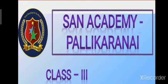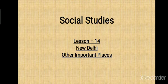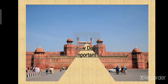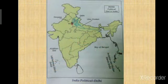Happy day children. Class 3, Session 3, Social Studies, Lesson 14: Delhi - Other Important Places. India is our country. New Delhi is the capital of India. Earlier, the capital of India was Kolkata. Delhi is located on the bank of the river Yamuna. The blue line in the map indicates the river Yamuna.